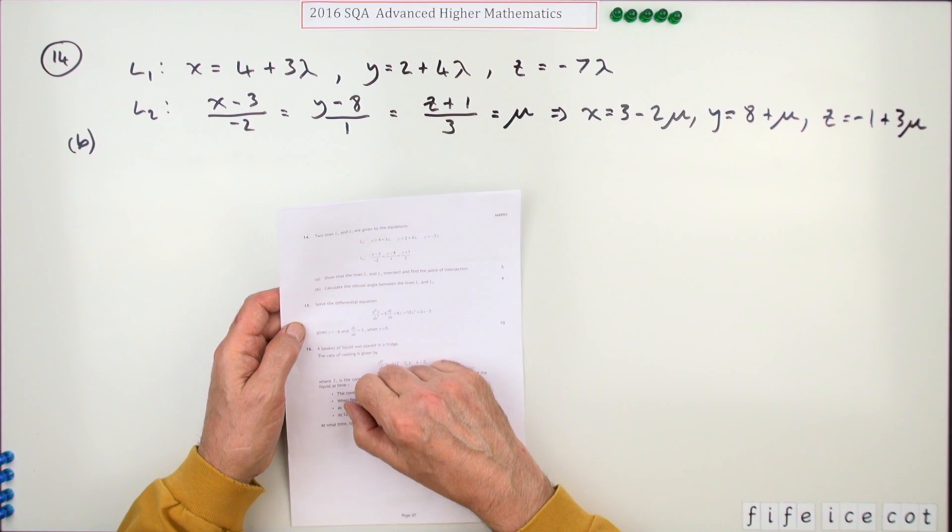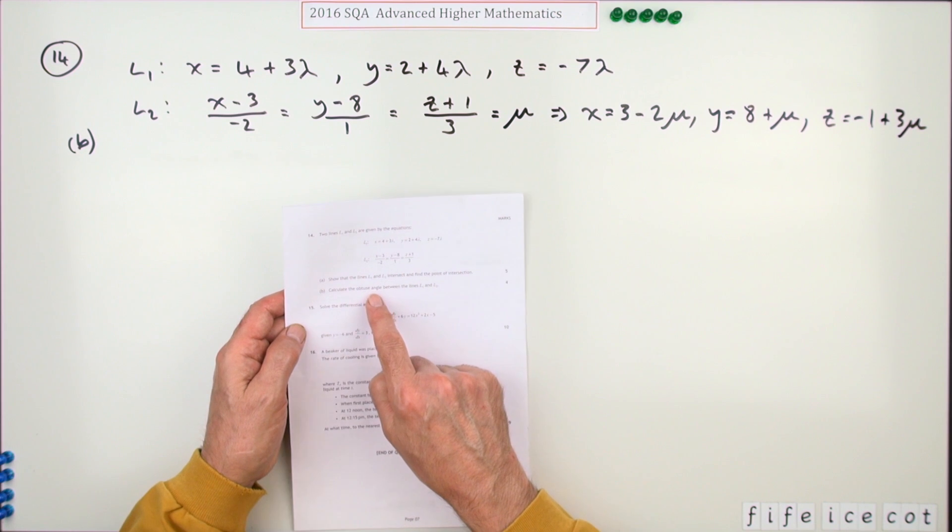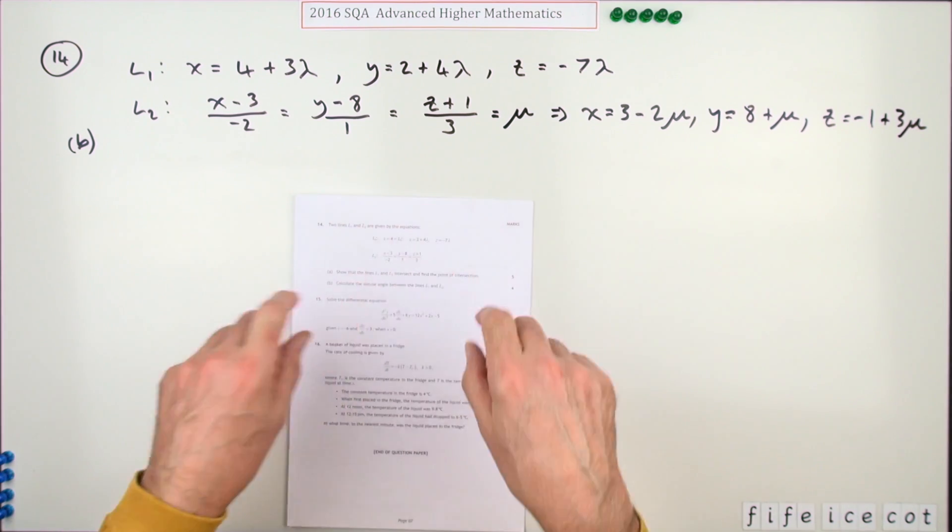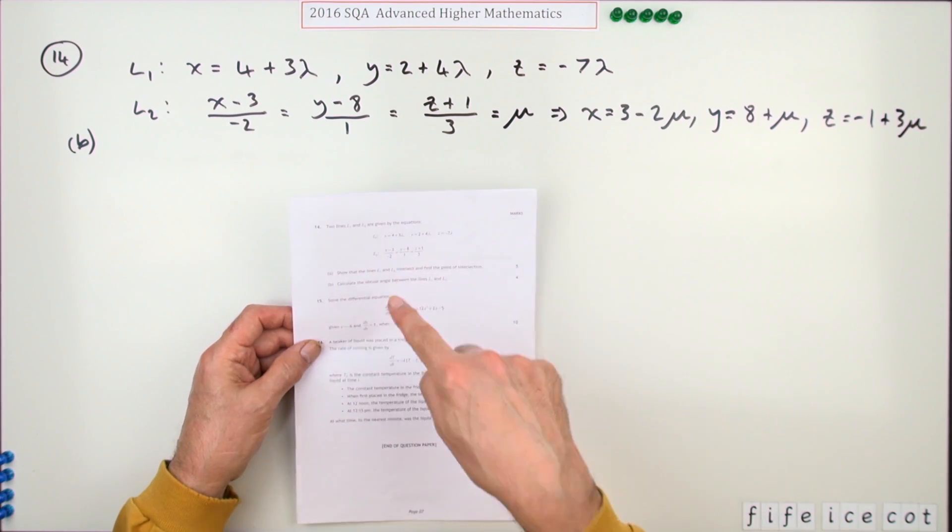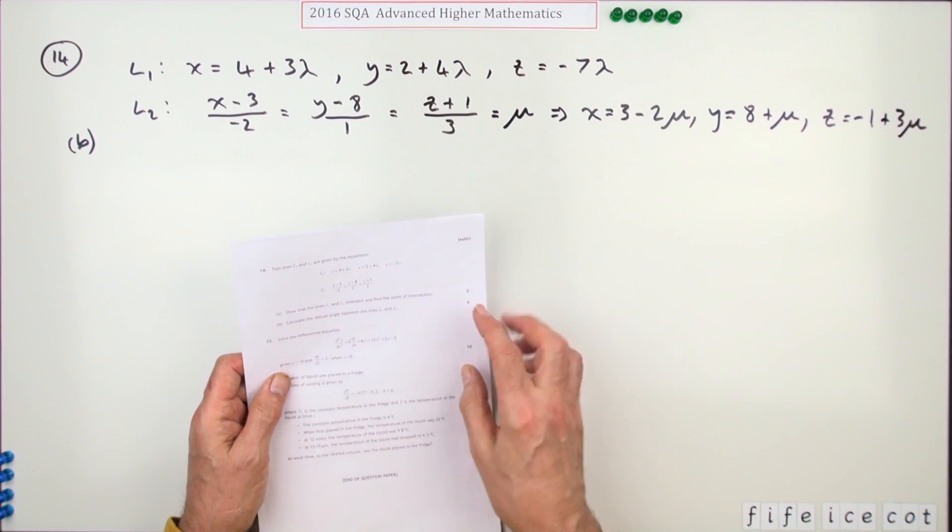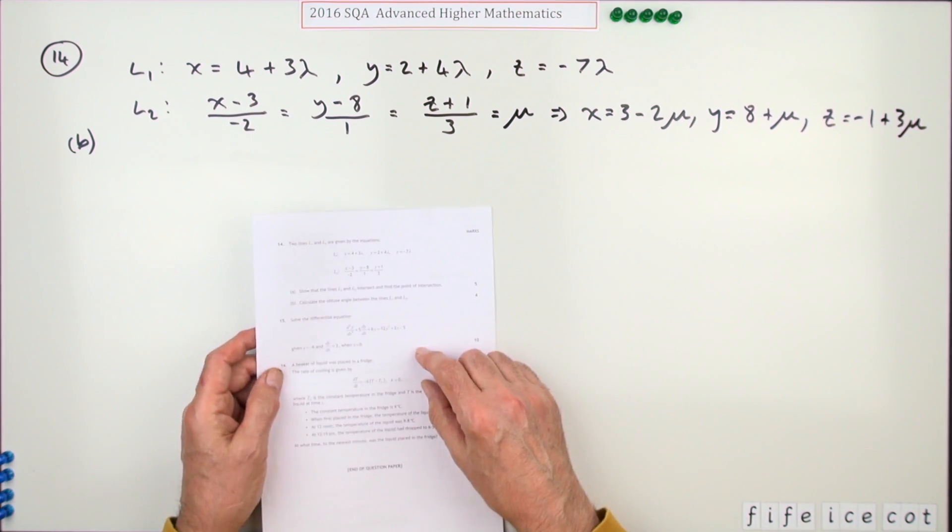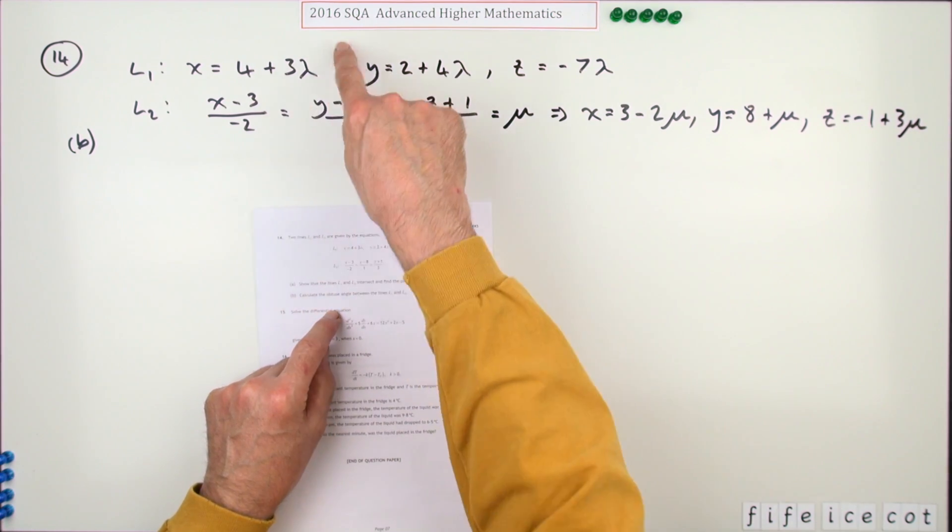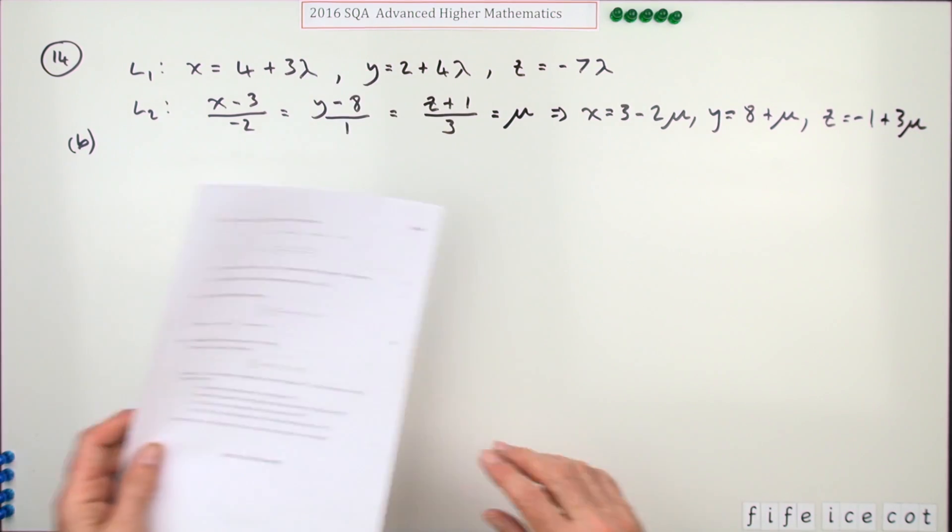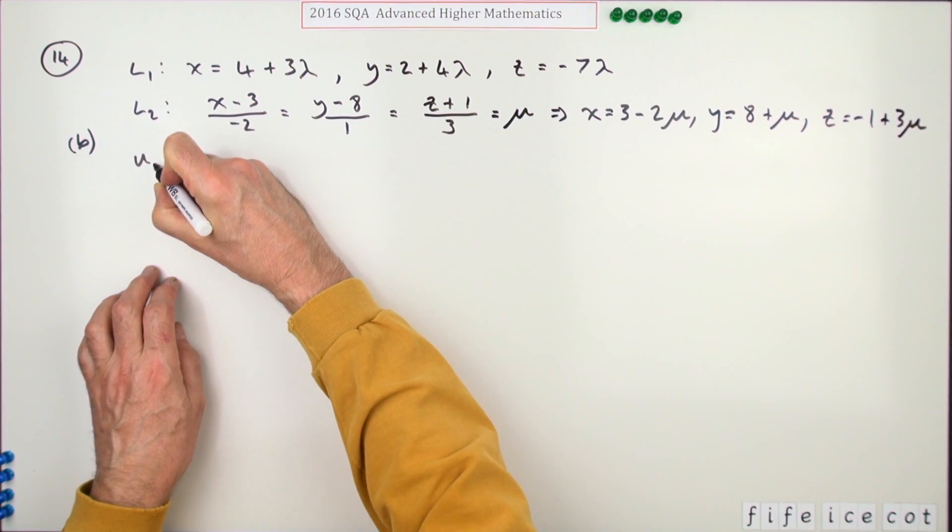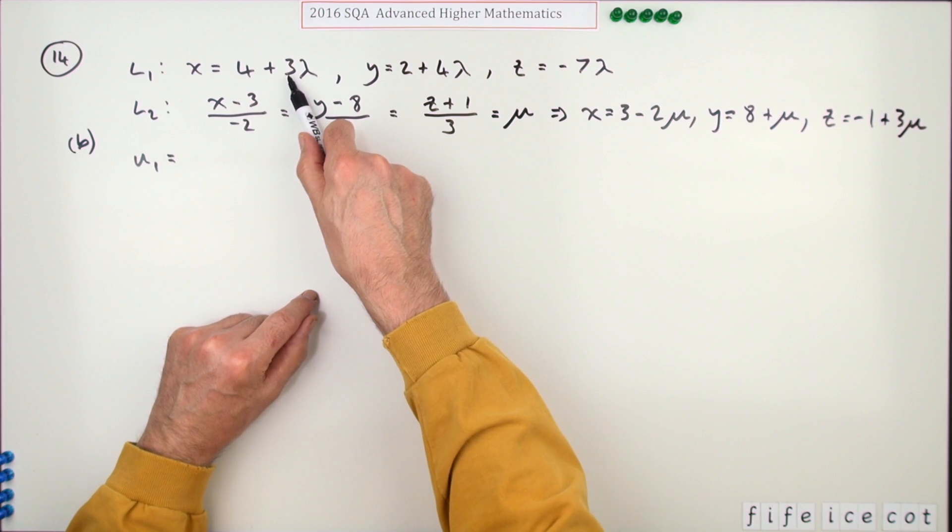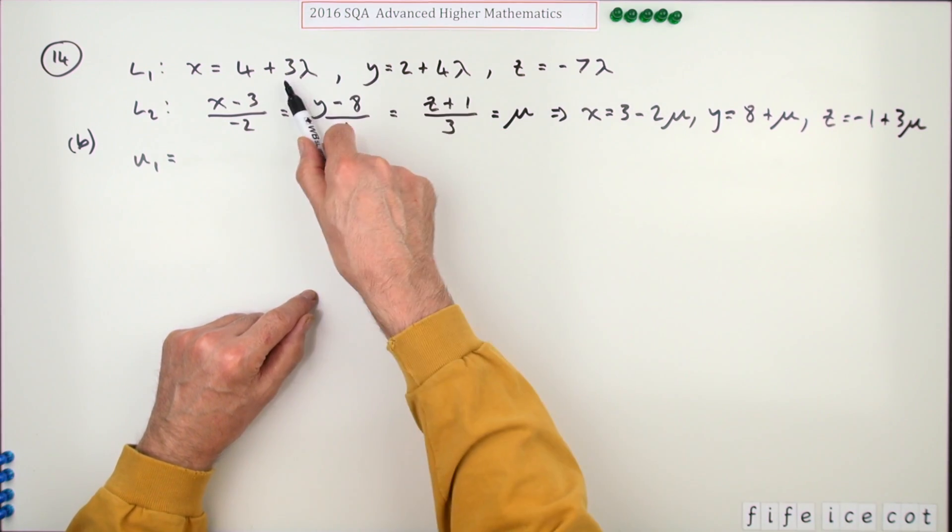For part B, calculate the obtuse angle between the lines. Because there'll be two angles which are supplementary, adding to 180. They want the obtuse one, so make sure you put that one down. Apart from that, it's just like the higher - identifying the directions, the vectors, the direction vectors of the lines.